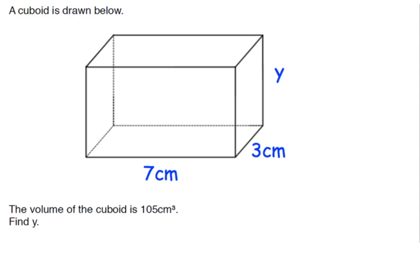A cuboid is drawn below. The volume of the cuboid is 105 centimetre cubed. So this one's really easy because we know the volume is just length times width times height. So we've got 105 equals 7 times 3 times height. And that comes to 21, so we've got 105 equals 21h divided by 21. So h equals 105 divided by 21, which is 5 centimetres. So that was really quite simple and straightforward.